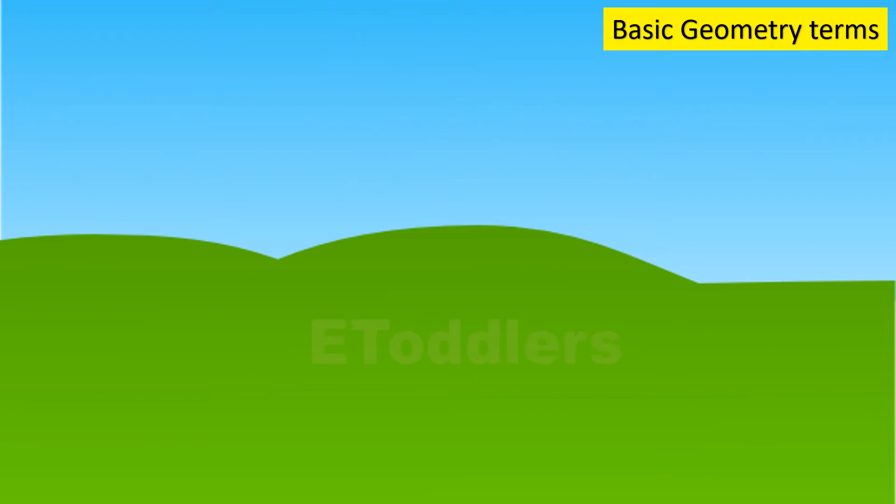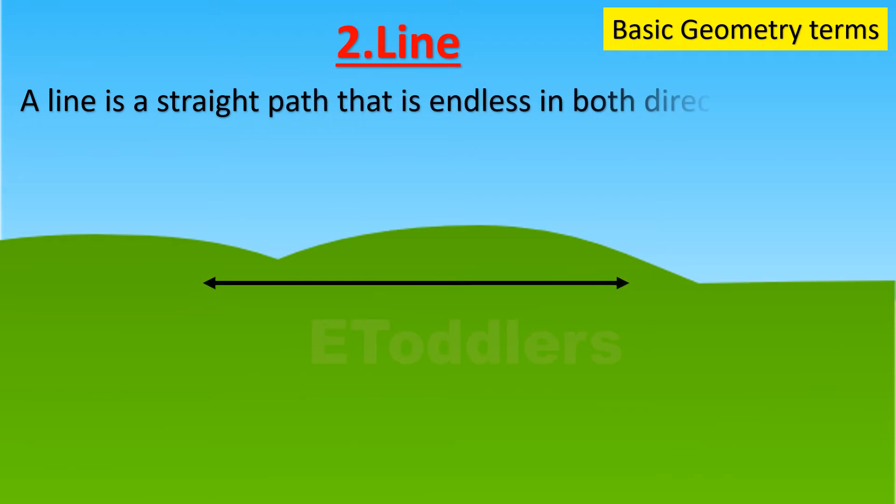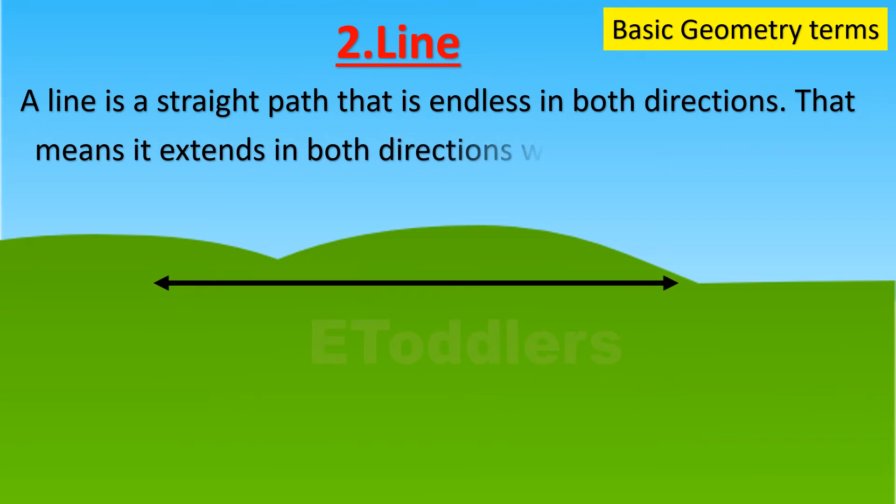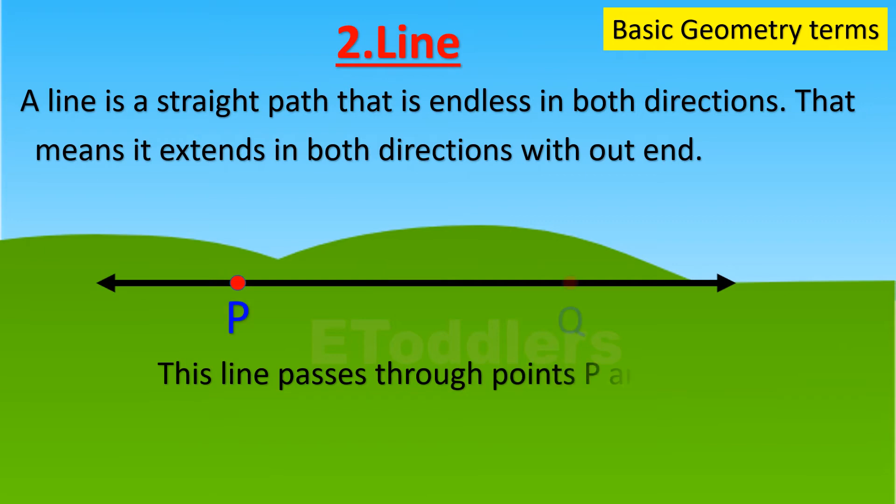The second term is line. A line is a straight path that is endless in both directions, meaning it extends in both directions without end. This line passes through points P and Q. We name it line PQ or line QP.